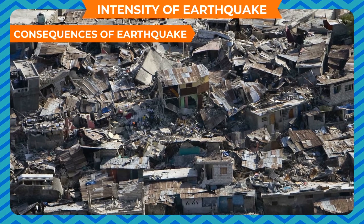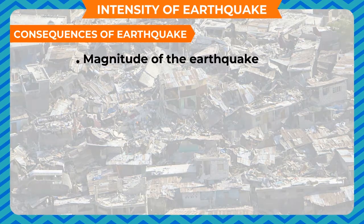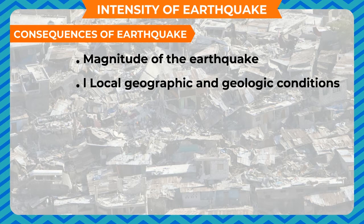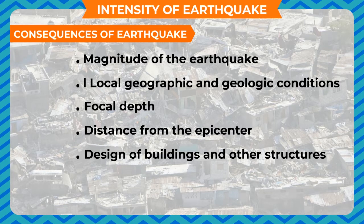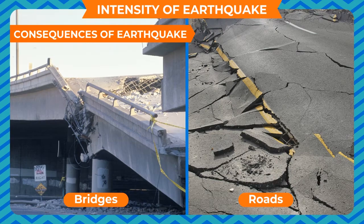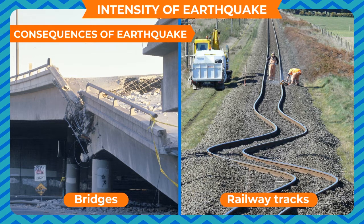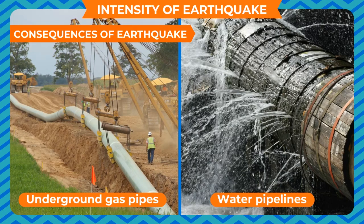Consequences of earthquake: The destructive effect of an earthquake depends upon the magnitude of the earthquake, local geographic and geologic conditions, distance from the epicenter, design of buildings and other structures, and density of constructions and population in the affected area. Earthquakes may cause damage to buildings, roads, bridges, and railway tracks. They might cause landslides, floods, and damage to underground gas pipes or water pipelines.